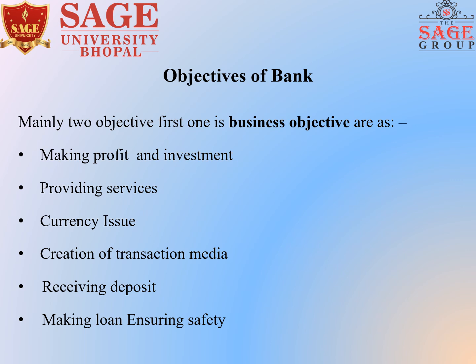As we understood the meaning of bank, on the ground of these, we can understand the objectives of bank. Mainly, banks work for two objectives. The first one is the business objective. Business objectives cover: making profit and investment through transactions and handling of money; providing services to customers in different aspects; currency issuance on the demand of the customer; and creation of transaction media.